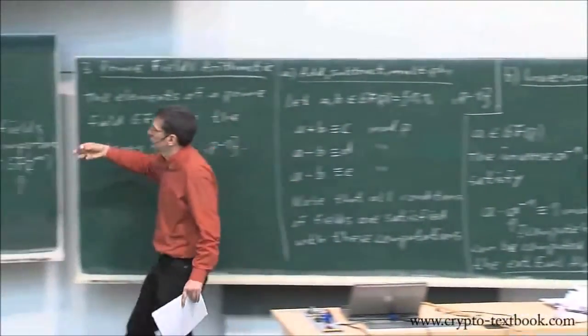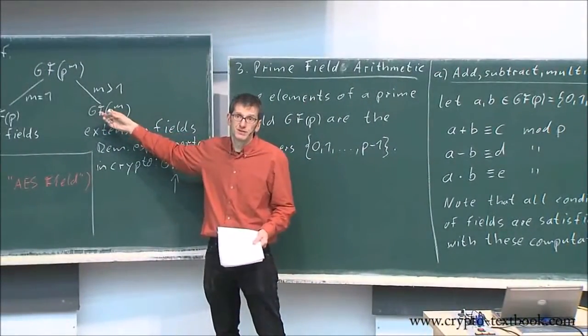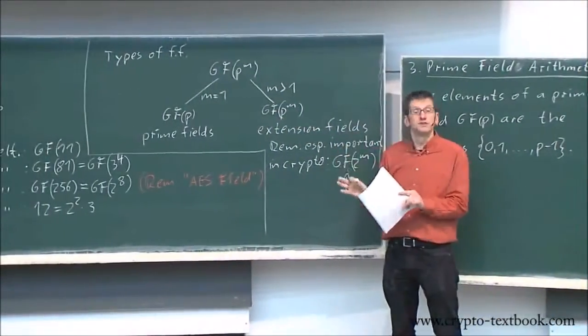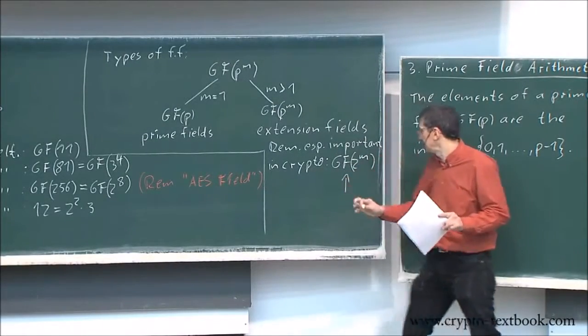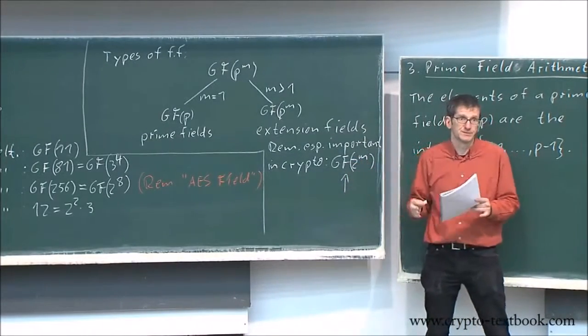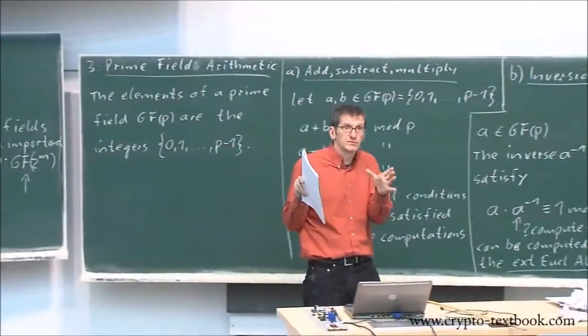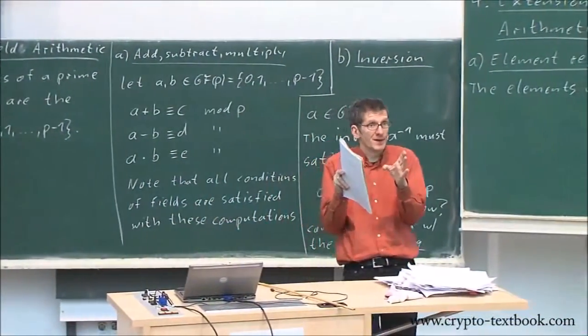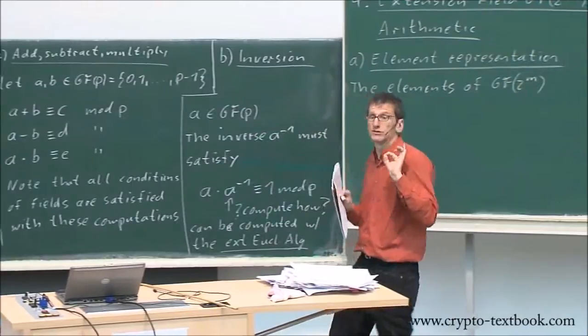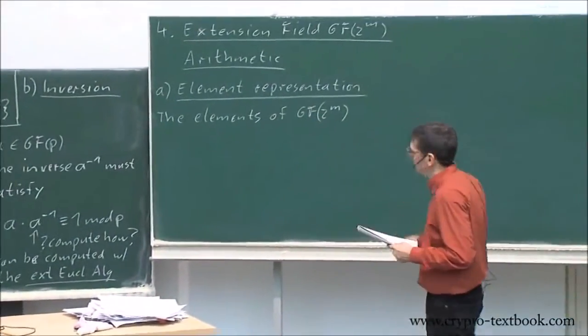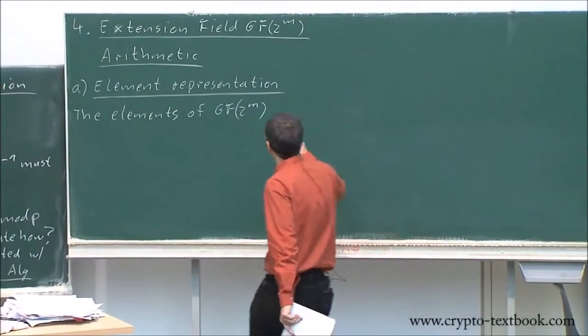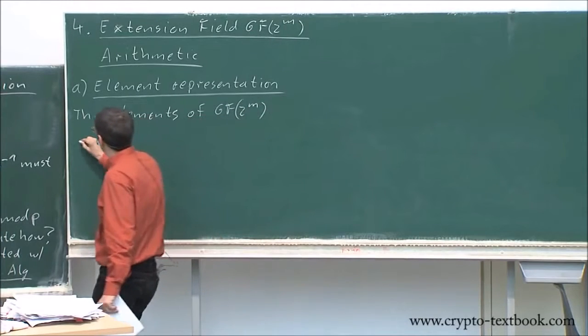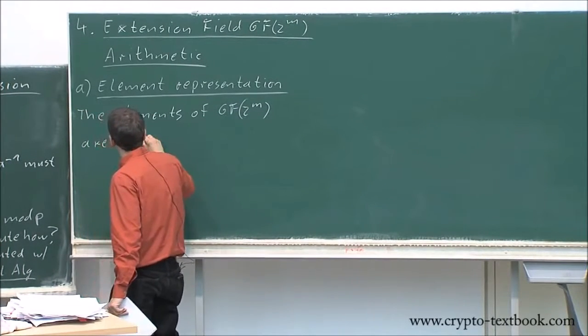Represent the elements of GF(2^m). By the way, you know the general extension fields are GF(p^m), but we only need this AES case. In AES we have GF(2^m), so we narrow our scope. We only look at GF(2^m), so the elements of GF(2^m) are polynomials.